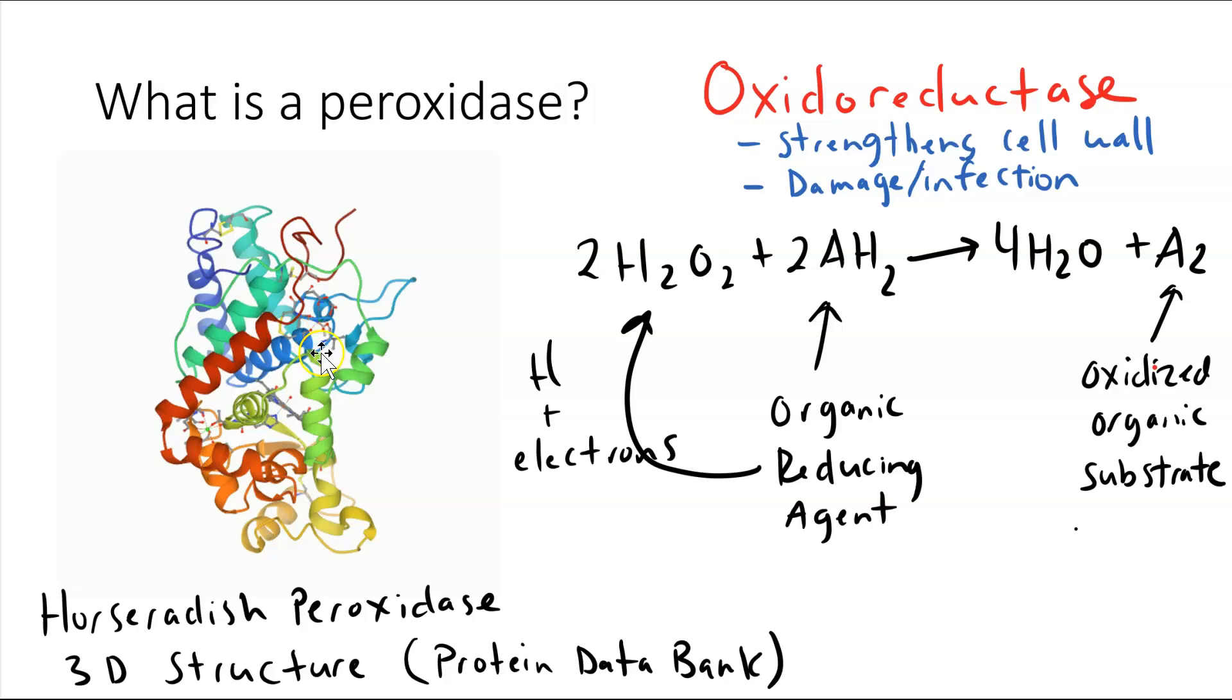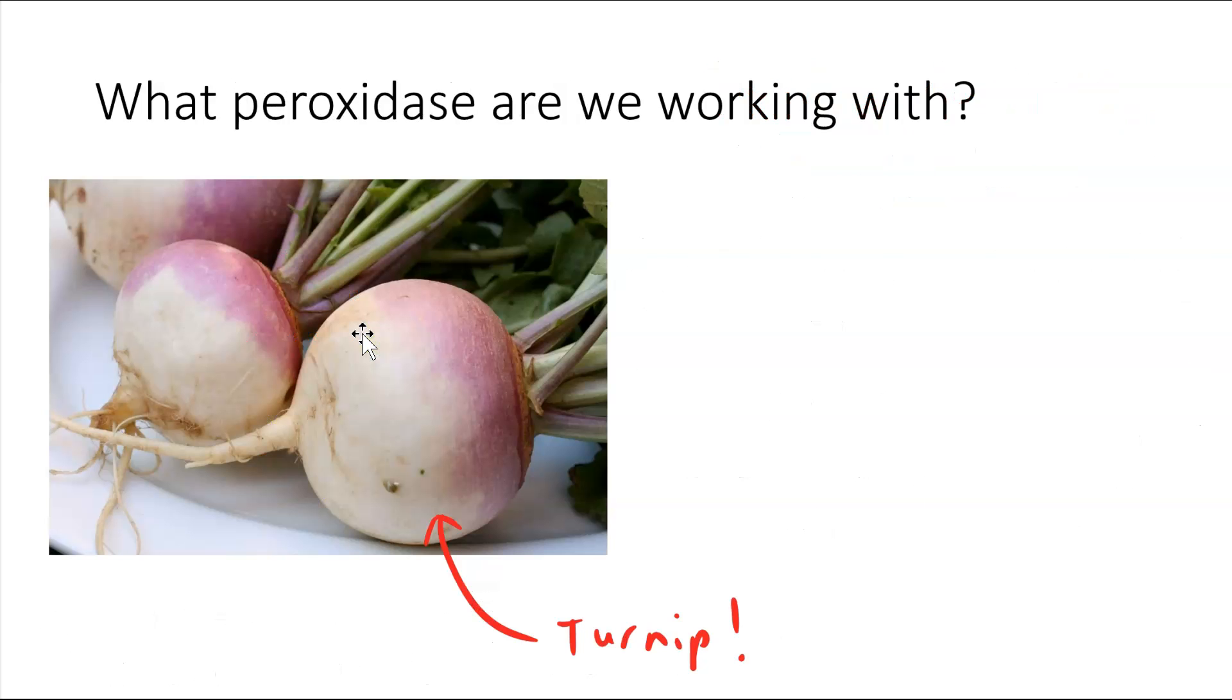This is a three-dimensional structure image from the protein databank of horseradish peroxidase, which you can use in this lab. We are going to use turnip peroxidase. Just before the lab, we will blend up turnip tissue to extract turnip peroxidase for our experiments.